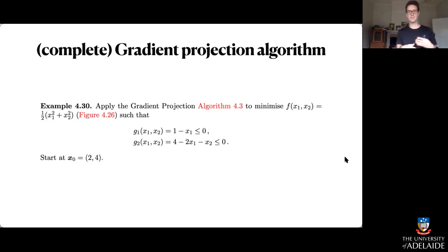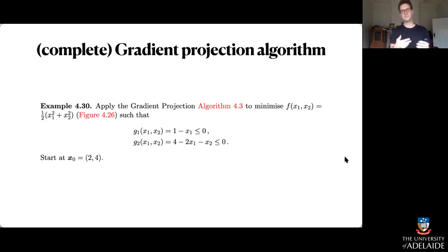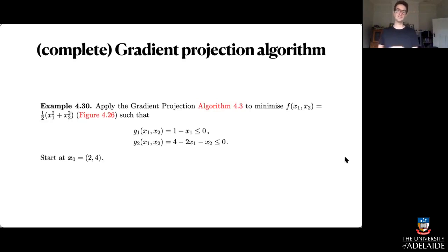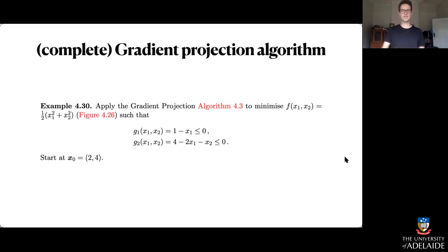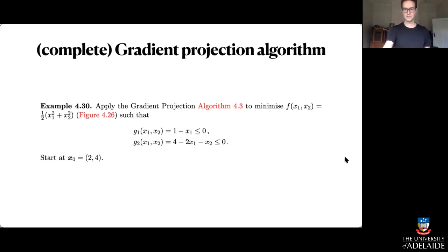We've just got two constraints to deal with. So one minus x1 has got to be less than or equal to zero, meaning x1 is going to be bigger than one, and 2x1 + x2 has got to be greater than or equal to four. We're going to start at a point that's in the feasible region: (2, 4).